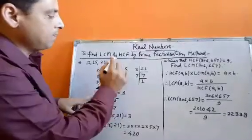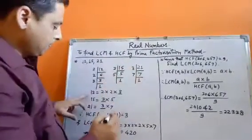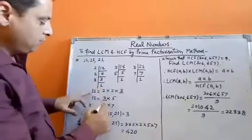Similarly, we will find the prime factors of 15: 3 and 5. And prime factors of 21: 3 and 7. So these are the prime factors of 12, 15, and 21.